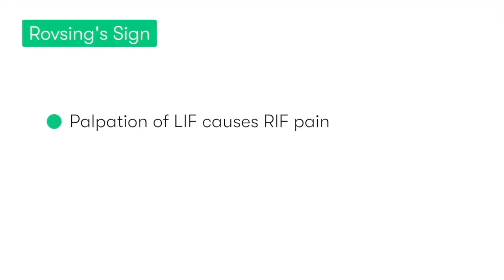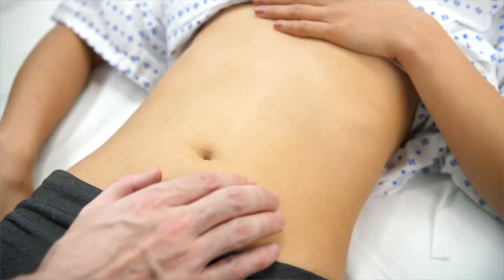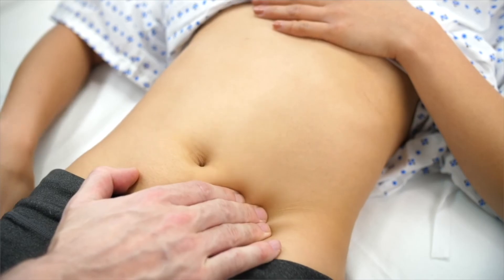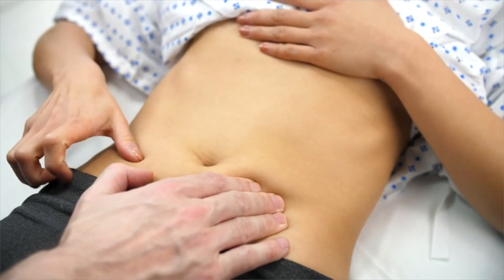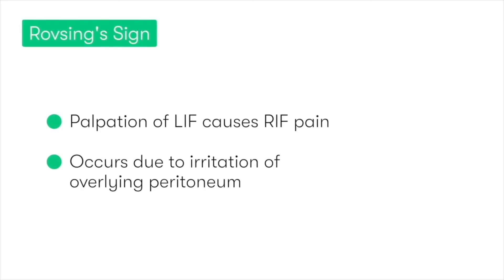Rovsing's sign describes when the patient is palpated in the left iliac fossa, and this results in pain in their right iliac fossa. It occurs as a result of the inflamed appendix irritating the overlying parietal peritoneum. So as we palpate the left iliac fossa, it causes the parietal peritoneum to stretch, and as the peritoneum overlying the appendicitis is already inflamed, this stretching results in the patient experiencing pain in the right iliac fossa.